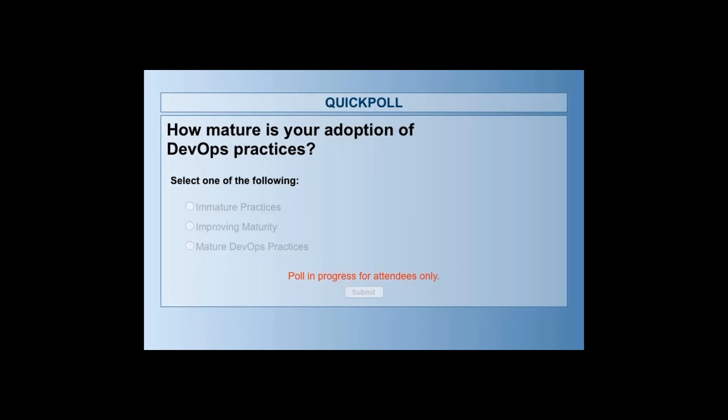For folks on the line: how would you rate your DevOps maturity? Are you new to DevOps and just getting started, are you improving, or have you been doing this for several years and feel you've really put a lot of DevOps practices in place? When looking across organizations, where are people defined in this spectrum normally?